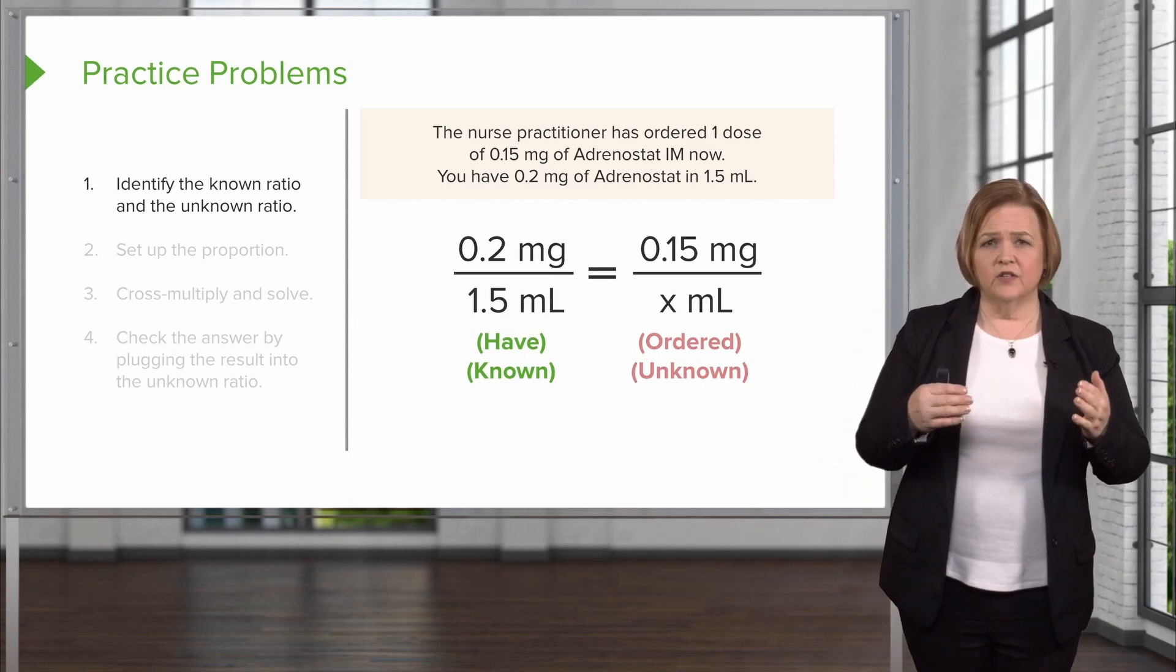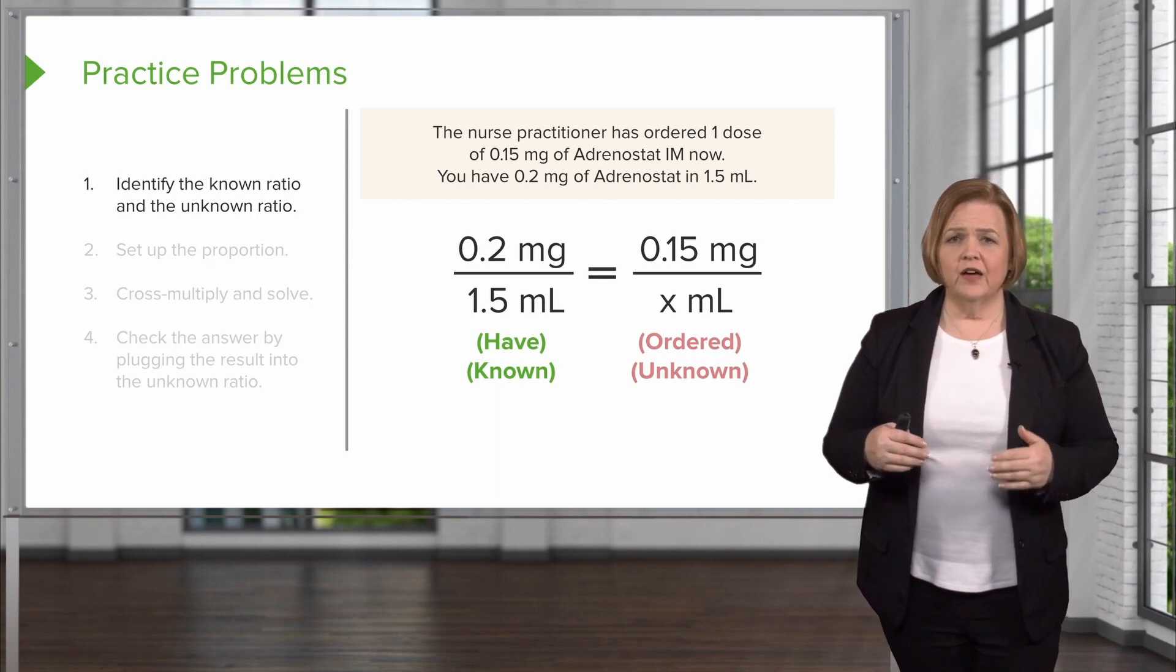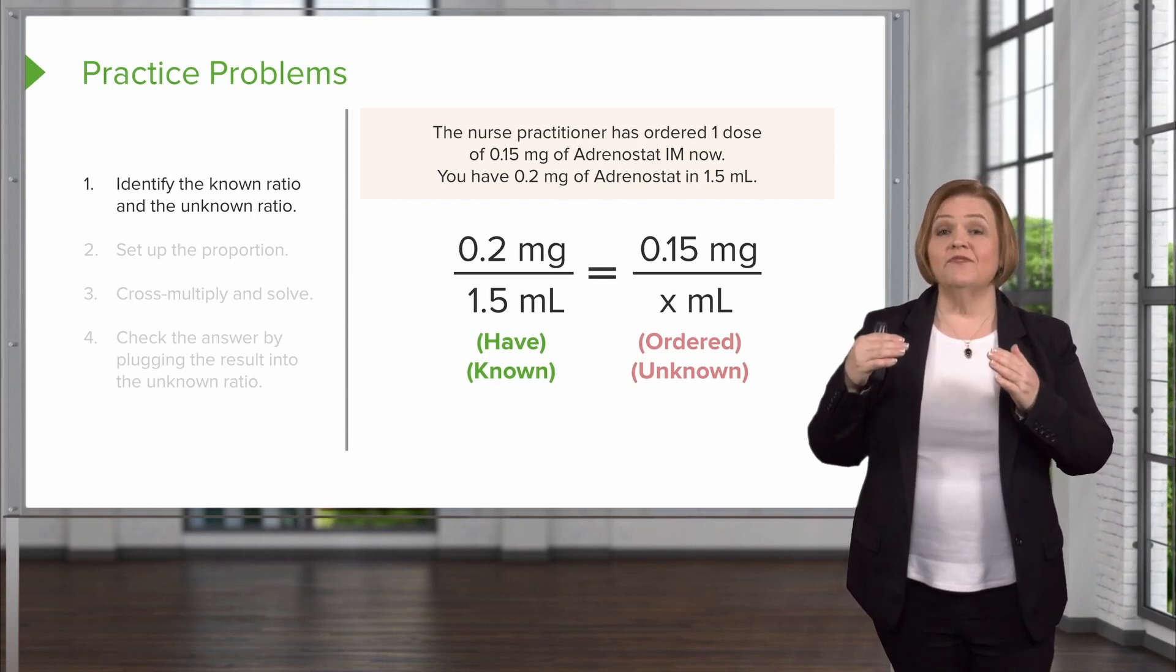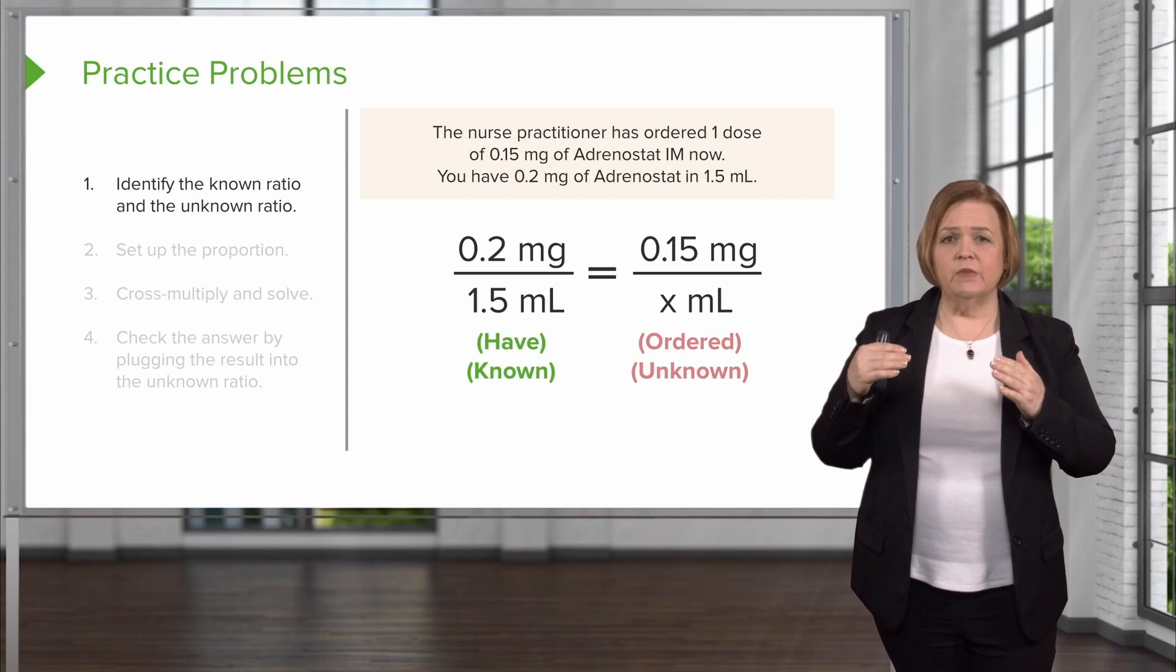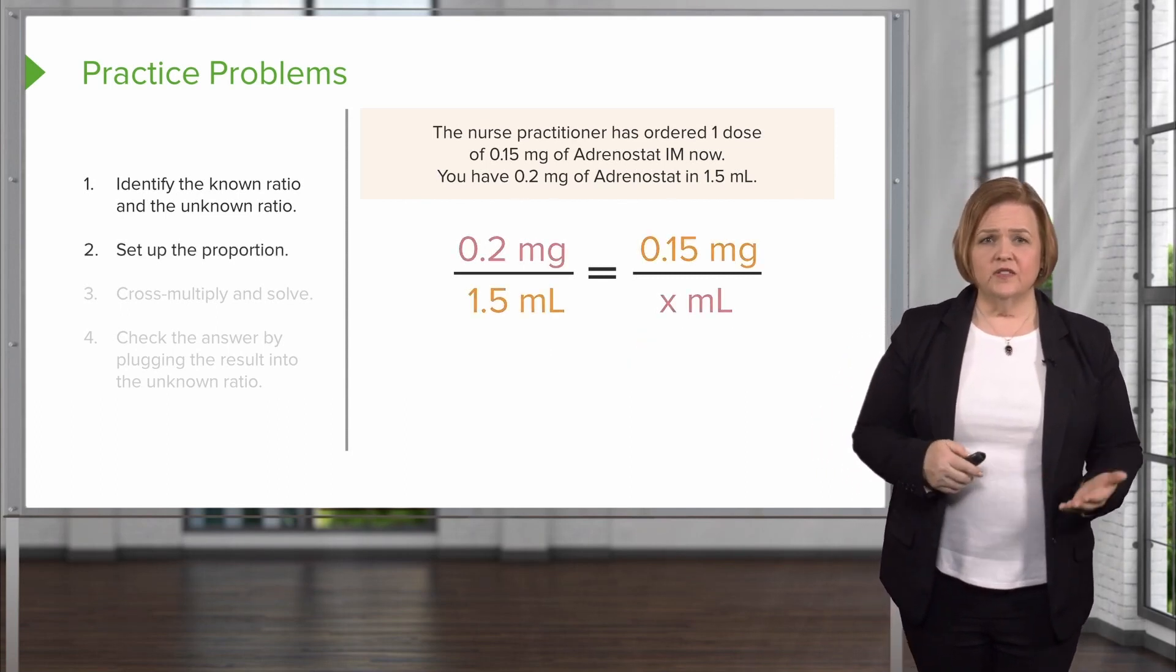So what we have is 0.2 in one and a half. That's the known ratio. Now we're figuring out for 0.15 milligrams, how many milliliters would I give? That's the unknown. So you set up the problem.